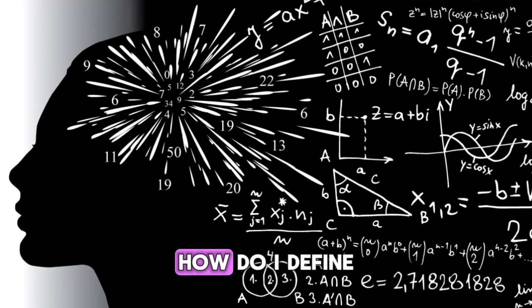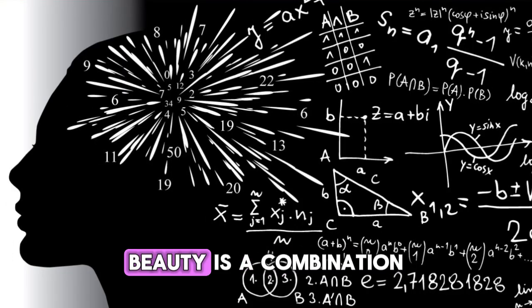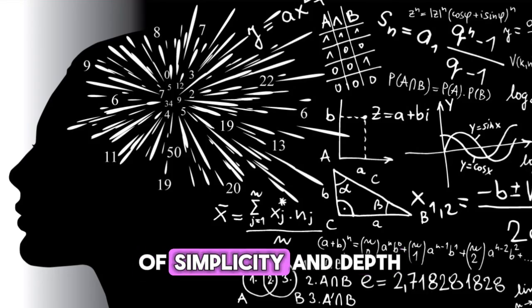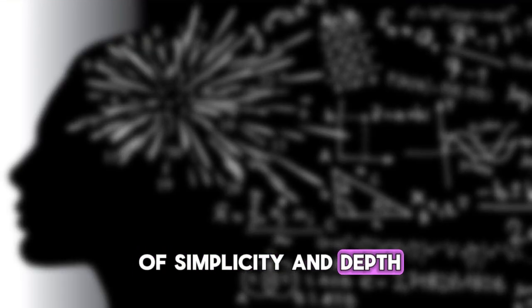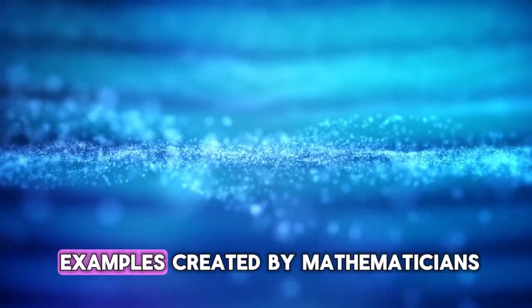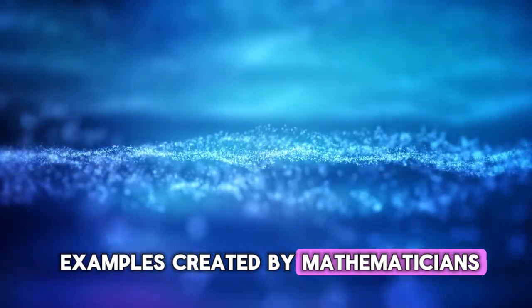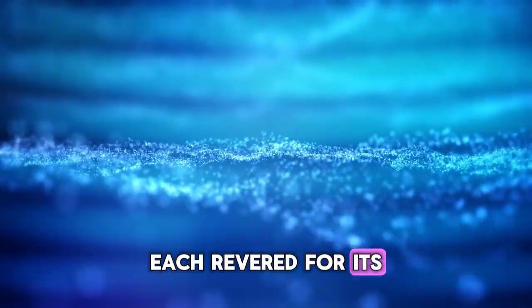How do I define beauty here? Beauty is a combination of simplicity and depth. Here are seven celebrated examples created by mathematicians, each revered for its aesthetic and intellectual appeal.